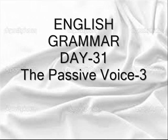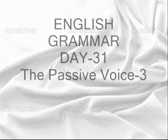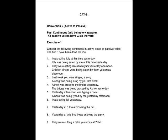Day 31, Passive Voice 3, Conversion 5 — Active to Passive, Past Continuous. Again, this is continuous. It is very simple: for 'was' and 'were', you add 'being' to 'was' or 'were', and all passive voice again has V3 as a verb. This is very simple.